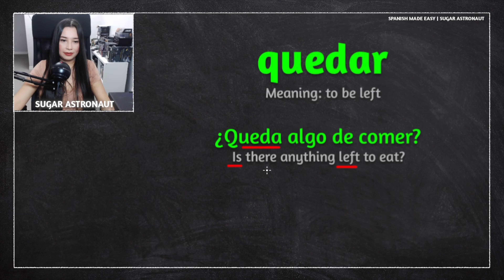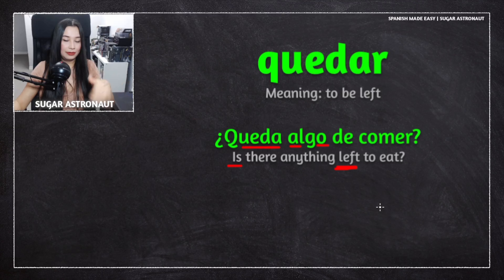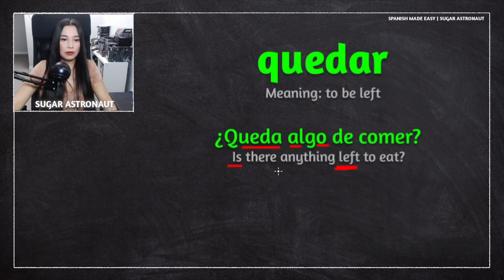'Queda' means 'is left' — we're talking about 'to be left.' 'Algo' means 'something,' and sometimes 'anything' depending on the situation. In this situation, you're not picky, you just want to know if there's anything left, so 'algo' means 'anything' here.